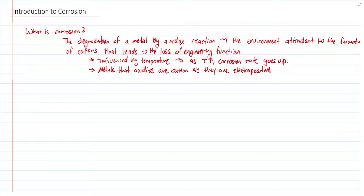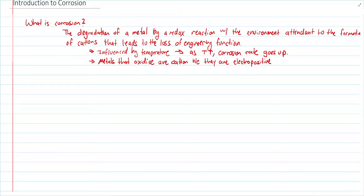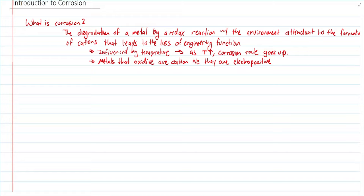Why do metals oxidize? Because they are electropositive. In a redox reaction, oxidation is when you lose electrons. Metals corrode because they're electropositive, so they lose electrons — they have electrons in the outer valence shell that they're ready to exchange. Reduction is when you accept electrons, and we'll get into more detail on that in a bit.